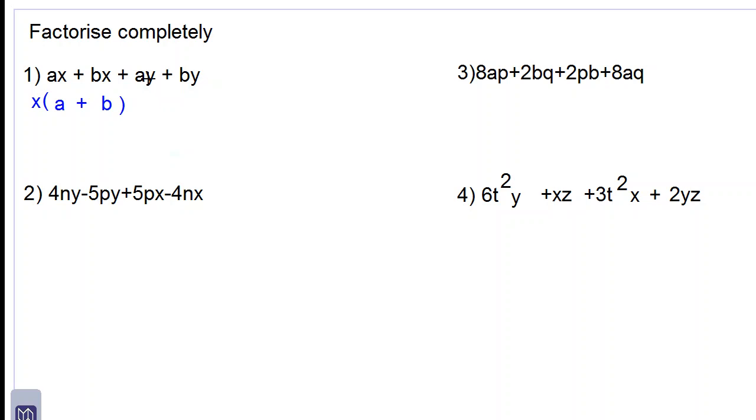We now look at the other two terms, ay and by. Both of them have a common factor, y, which we factor out. So we have plus y times a plus b.